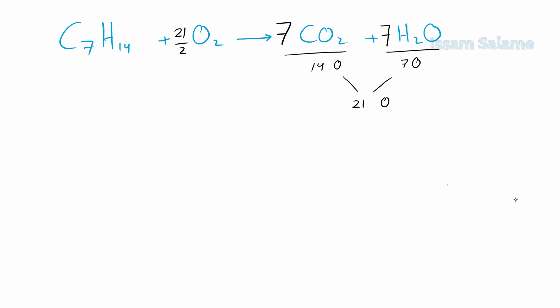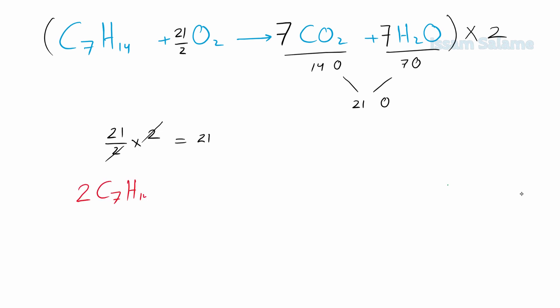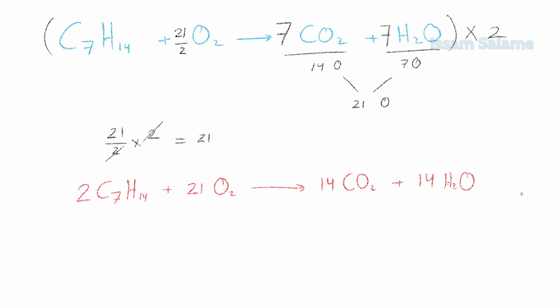As we know from math, multiplying 21/2 by 2 simplifies to 21. To eliminate the fraction, we multiply the whole equation by 2. The final balanced equation is: 2 C₇H₁₄ plus 21 O₂ produces 14 CO₂ and 14 water molecules. Note that if we had used the odd-even technique, we would arrive at the same answer.